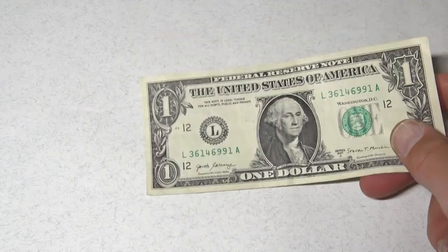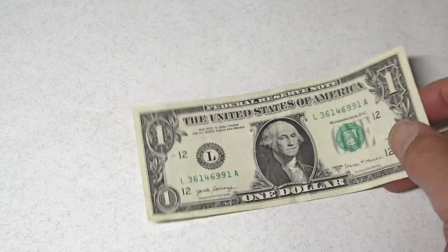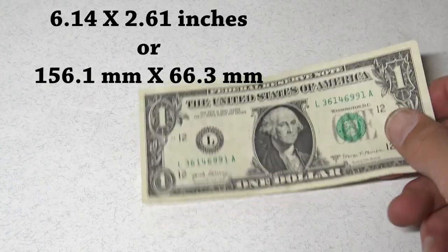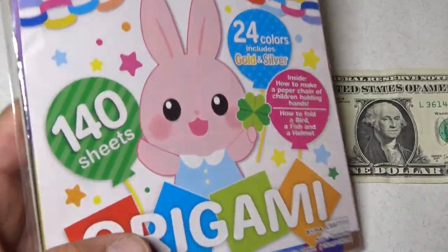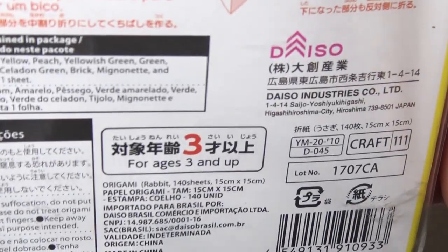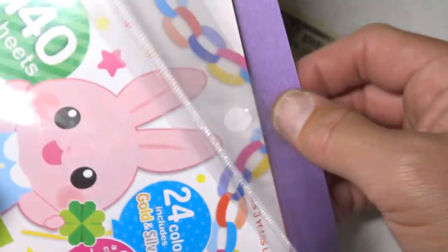All right, so for this model, I'm going to use a US $1 bill, but you could use any currency or just anything shaped like a dollar. And for paper, I'm going to use a six inch square of origami paper, but you could use a six inch square of any type of paper.